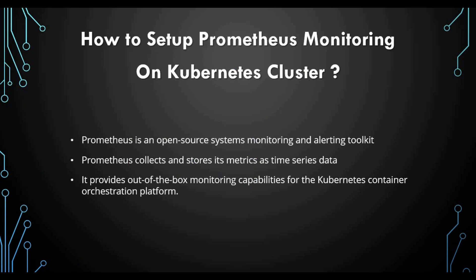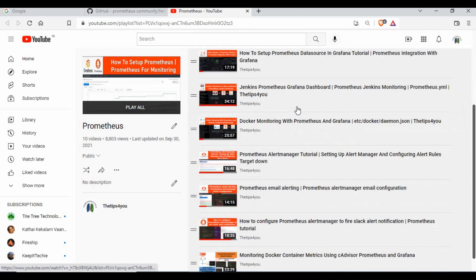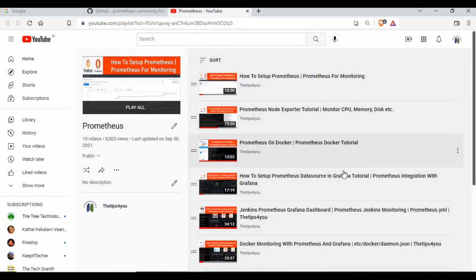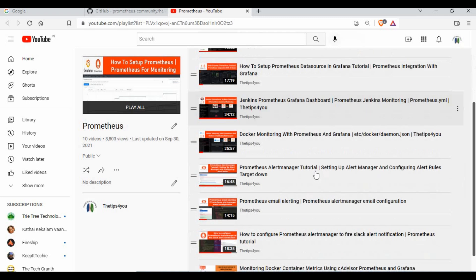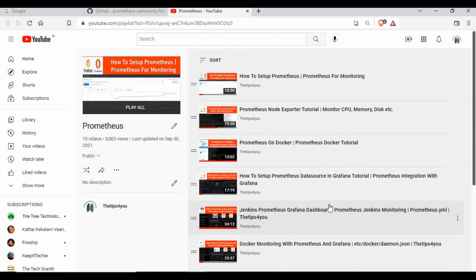Let's talk about what Prometheus is. Prometheus is an open source system monitoring and alerting toolkit. We can use Prometheus to monitor most kinds of applications or systems, whether Windows, Linux, or different kinds of applications. We can get data using different kinds of Node Exporters, and Prometheus collects and stores these metrics as time series data. I will link a complete Prometheus playlist in the video description, which covers setting up Prometheus, Node Exporters, monitoring Docker and Jenkins, creating email and Slack alerts.